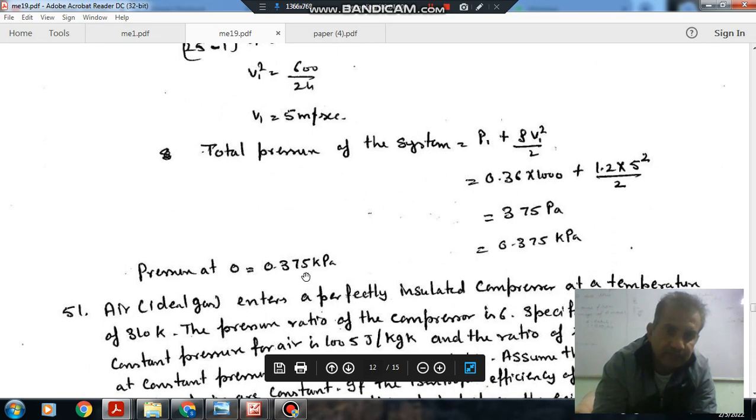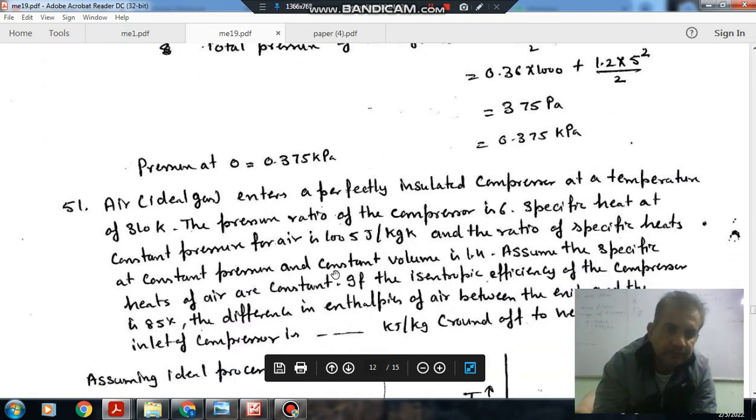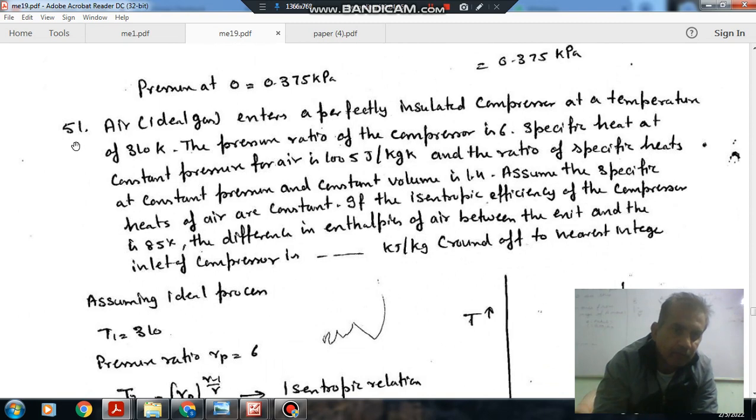The total pressure is preserved because at this point when it strikes the plate, the velocity will become 0. So the whole of the pressure will be static pressure at this point. Dynamic pressure also converts into static pressure. Total pressure is 0.36 × 100,000 plus 1.2 × 5² by 2, that is 375 Pascal or 0.375 kPa. So answer is 0.375 kPa. Next, question 51.